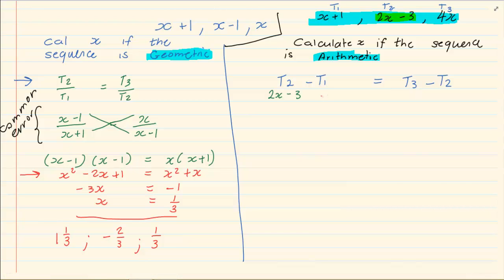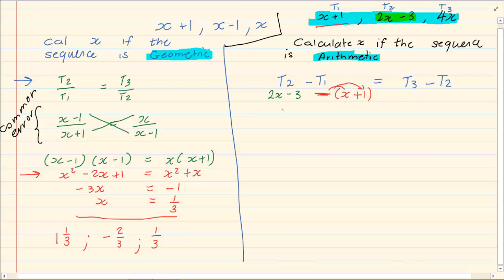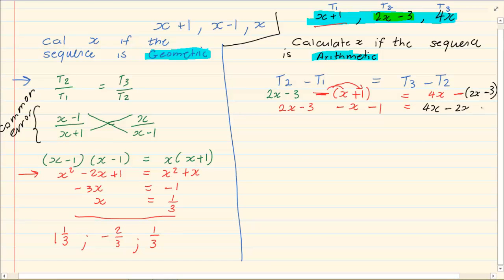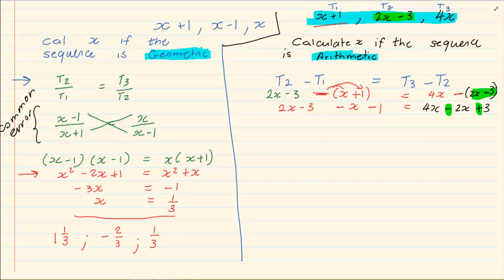At the next step you must be careful — it is minus term 1, but you must put it in brackets because the negative affects the signs. So we have (2x minus 3) minus (x plus 1) equals 4x minus (2x minus 3). Can you see how important the negative sign is and what it does to the brackets? The signs change, so you must remember to put the brackets — this is the most common mistake we find in this section.